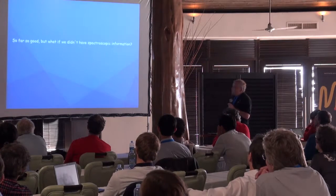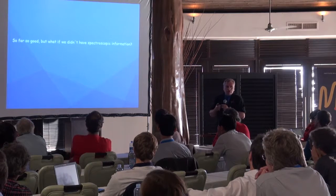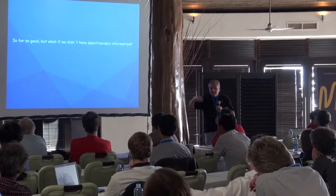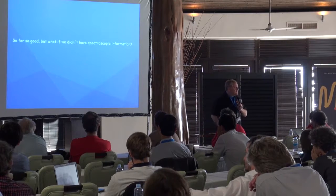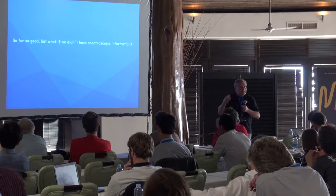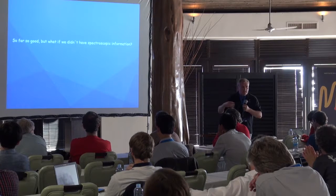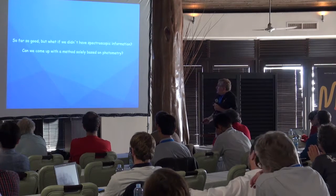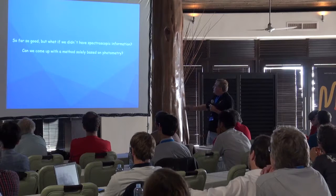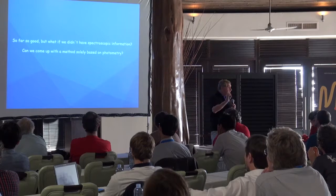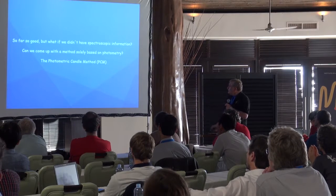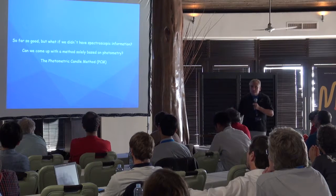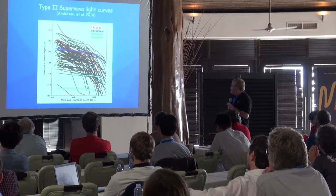So far so good. But what if we didn't have spectroscopic information? This will be the case when LSST and all these massive surveys start to produce photometric data by the thousands, or even perhaps millions of supernovae. Can we come up with a method based solely on photometry? We call this the photometric method. Thomas is responsible for developing that technique.